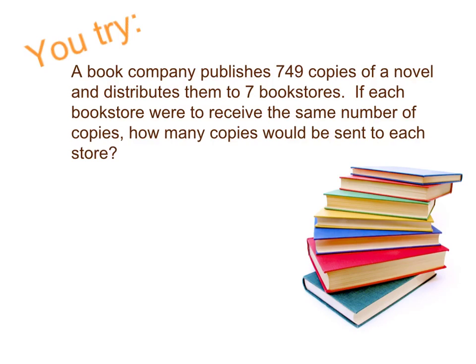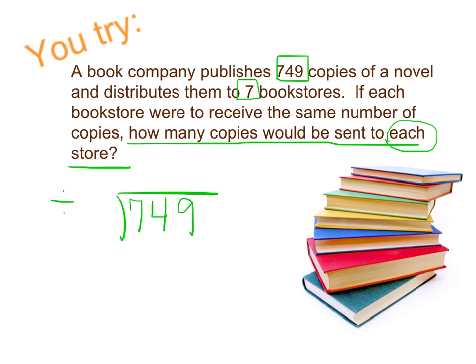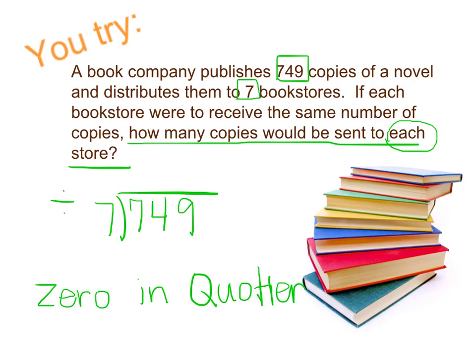Alright, you try one. A book company publishes 749 copies of a novel and distributes them to 7 bookstores. If each bookstore were to receive the same number of copies, how many copies would be sent to each store? Remember, the first thing you're going to do is underline that question and look for keywords. 'Each' in the question tells you the operation is division. Box those numbers: 749 divided by 7. Try this out. Remember, you're looking for a zero in the quotient — put your answer on Edmodo and explain why there is a zero in the quotient.